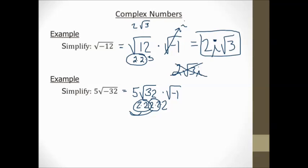So 5 times 2 is 10, times 2 is 20. And then I have a square root of 2 left over. But the square root of negative 1 is i. So I put my i in front of the radical in the coefficient. And there's my answer, 20i square root of 2.